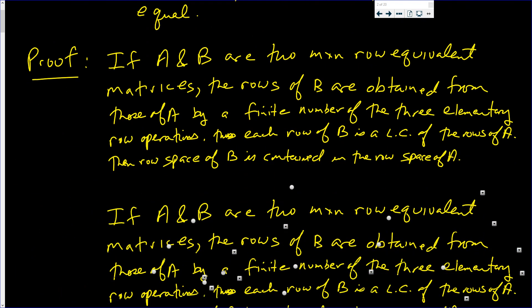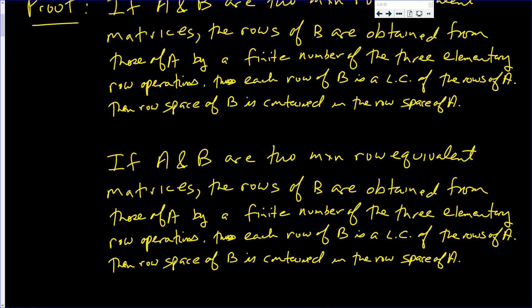If A and B are two n by n row equivalent matrices, then the rows of A are obtained from the rows of B by a finite number of elementary row operations. And so each row of A is a linear combination of the rows of B. Hence, the row space of A is contained in the row space of B.